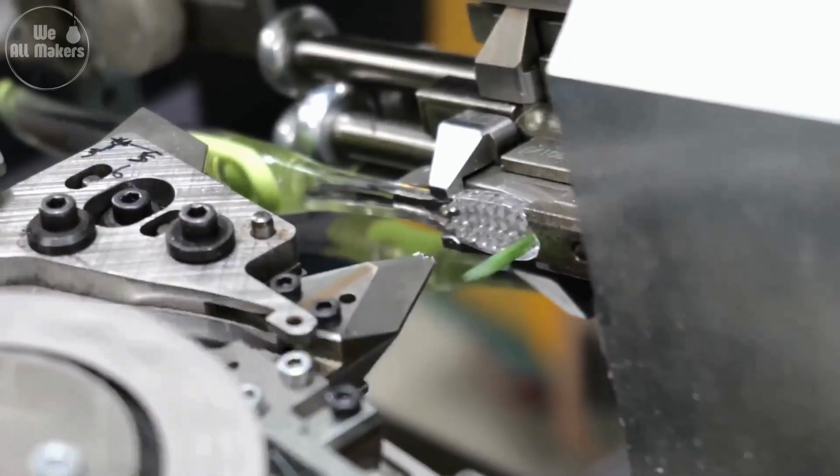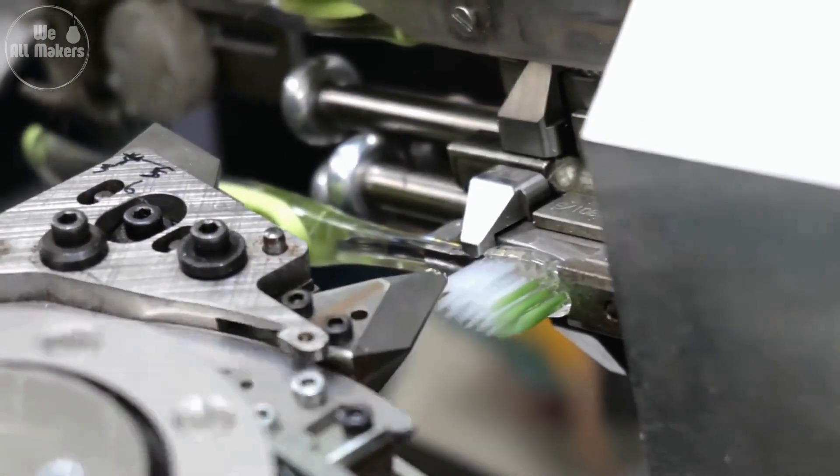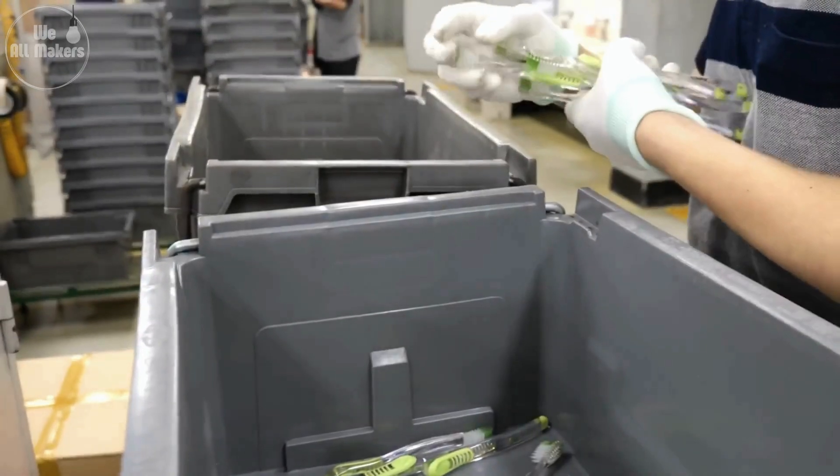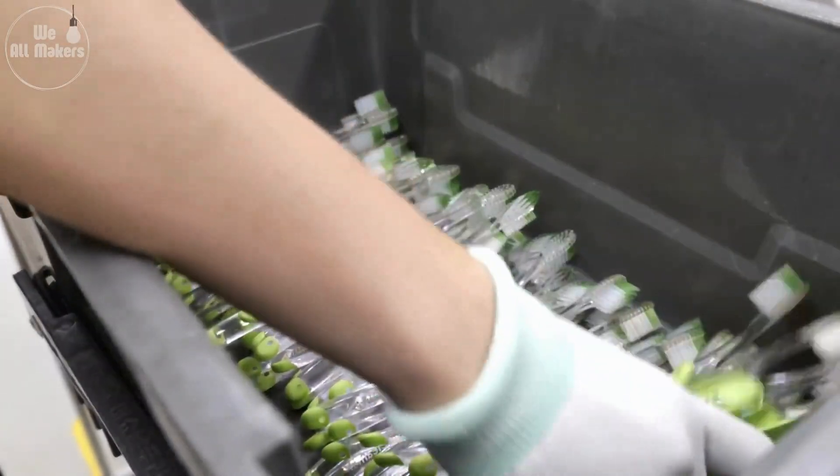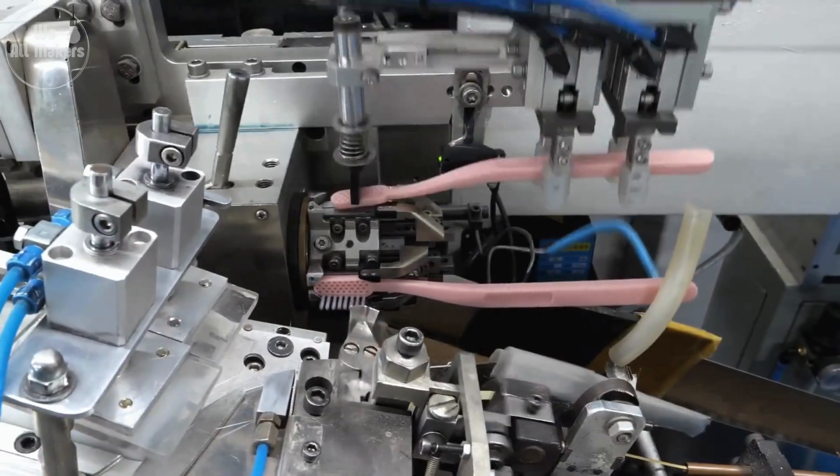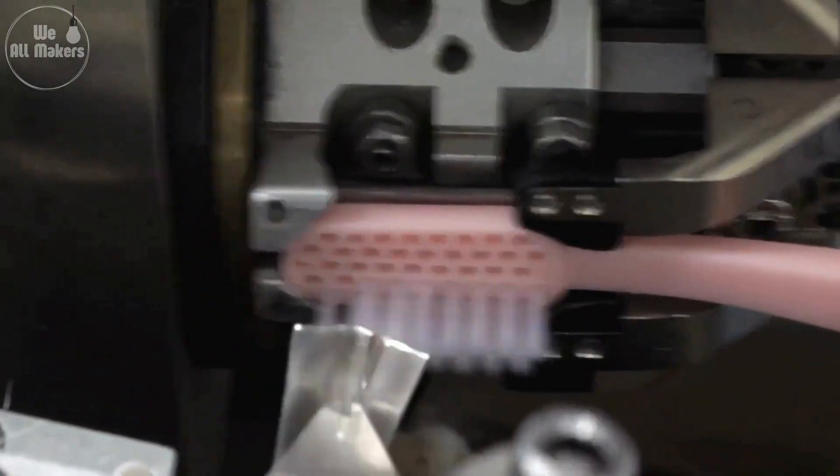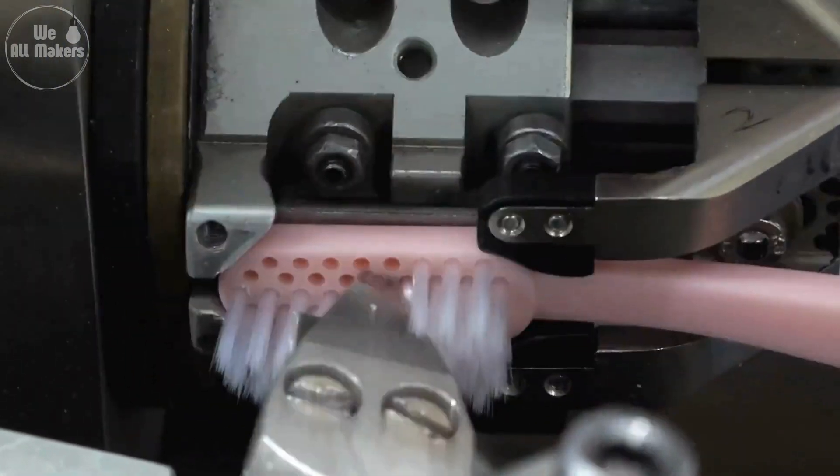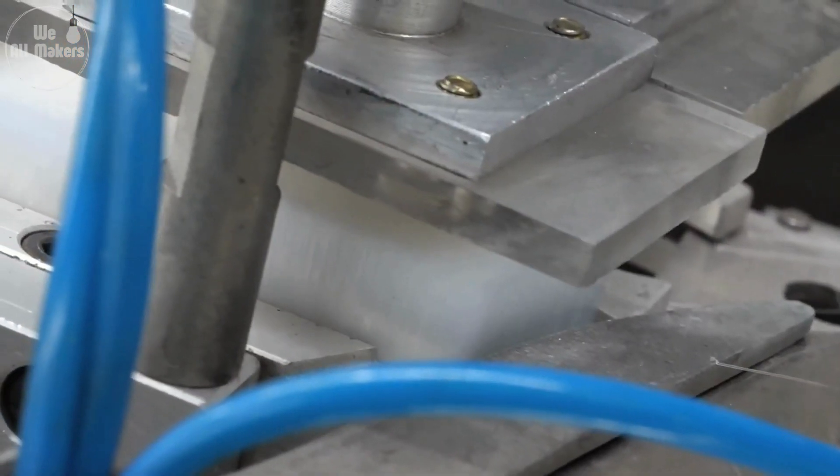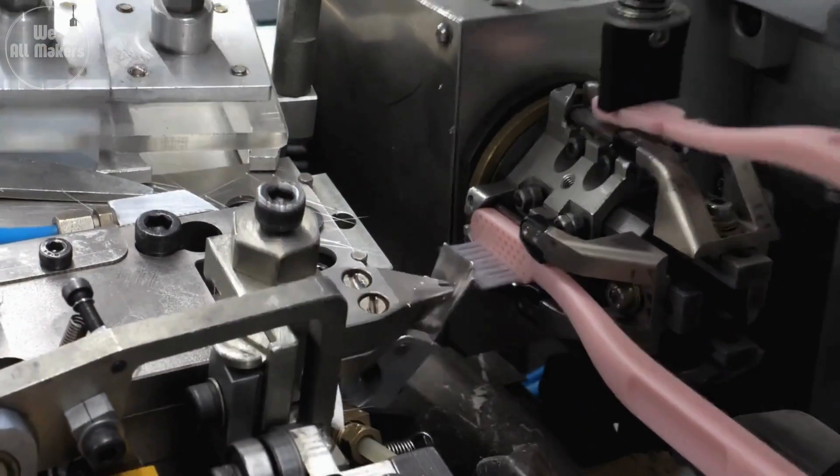Inserting the bristles into a toothbrush might seem simple, but it's actually a highly precise process. Some advanced factories use machines that can insert thousands of bristles in less than a minute. What's really cool is that these machines not only place the bristles, but also fold them in half and anchor them securely into the brush head, all in one seamless motion.